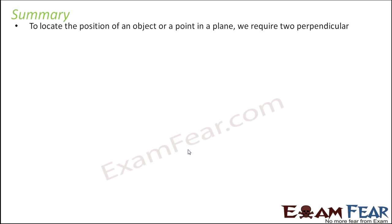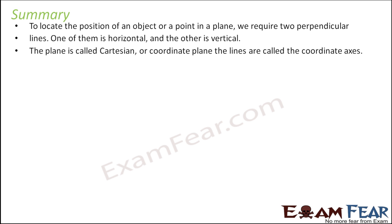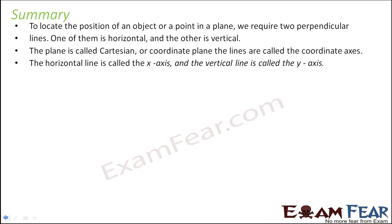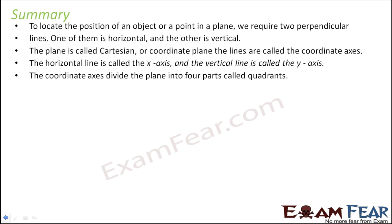Let's see the summary of this chapter. To locate the position of an object in a plane, we require two perpendicular lines — one horizontal and one vertical. This plane is called the Cartesian system, named after Descartes. It is also called the coordinate plane, and these lines are called coordinate axes: the horizontal is the x-axis and the vertical is the y-axis.